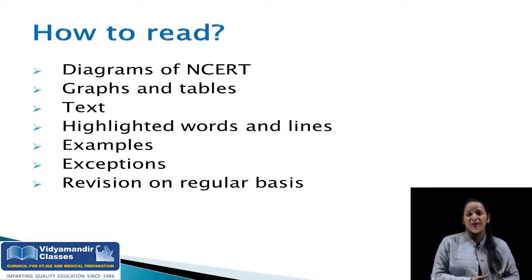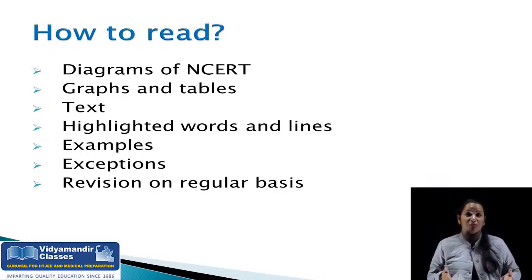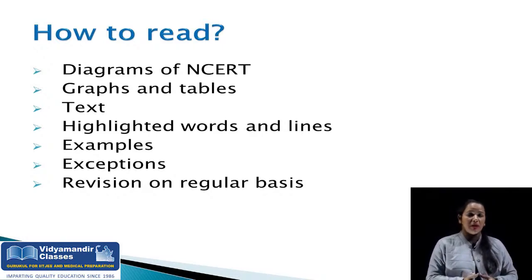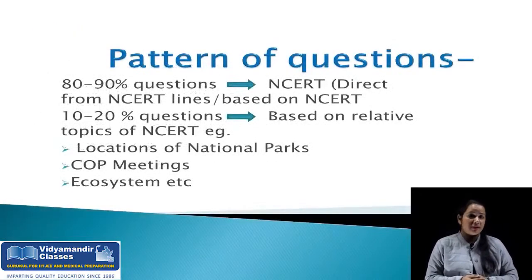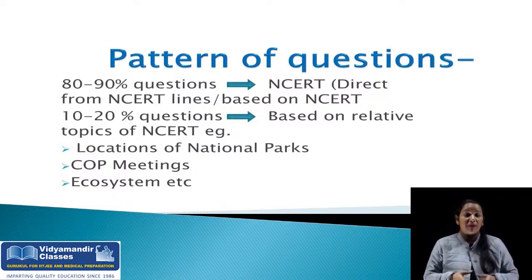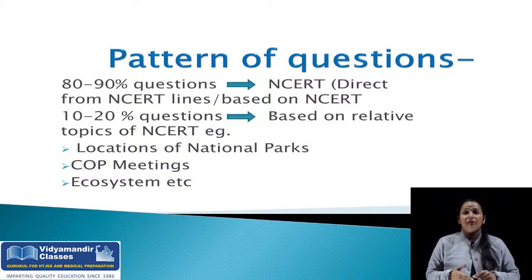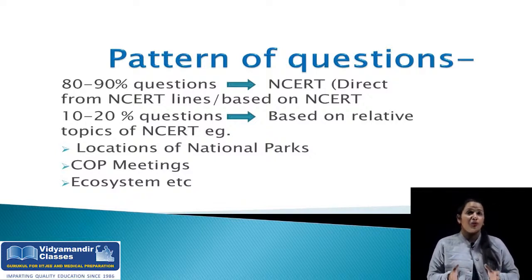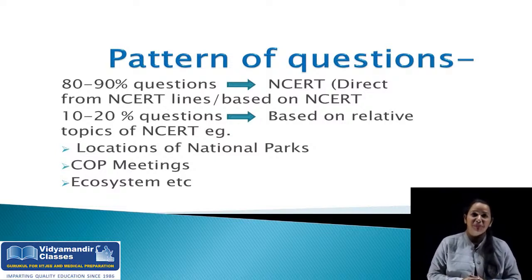Revise it on a regular, time-to-time basis. By revising — recalling everything repeatedly — you will be able to attempt the paper very quickly, because for the biology section you have maximum 30 to 35 minutes. You need to complete bio within that time, and that will only be possible if you have revised multiple times. For revision and last-moment preparation, make small concise notes in the form of flow diagrams, and make separate notes for examples and revise them repeatedly whenever you have time.